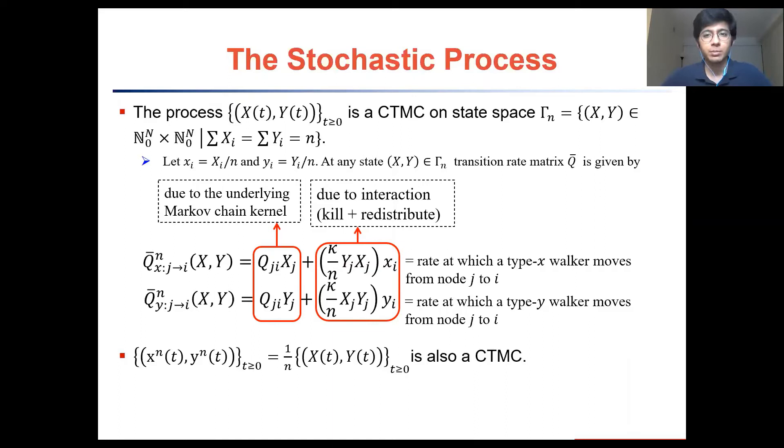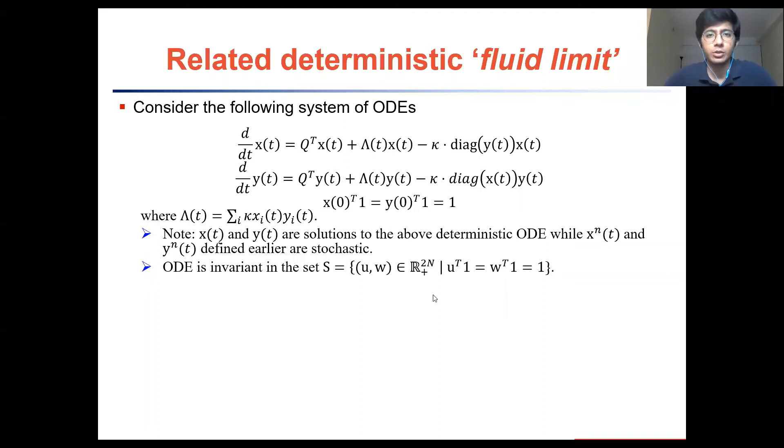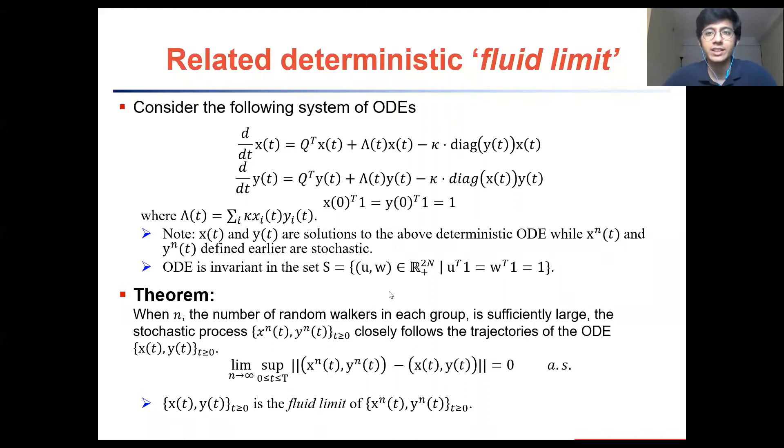We wish to analyze the convergence properties of this continuous time Markov chain given by little x raised to n and little y raised to n, which are the density distributions of the type x and type y walkers respectively at any given time t. In order to do that we consider the following system of ordinary differential equations. These equations were derived by examining the so-called mean field of a continuous time process. What this means is that we took summation over all possible jumps of a stochastic process multiplied by the rate at which each jump can occur. Here by jump we mean type x walkers moving from node j to i or type y walkers moving from node j to i. We proved that for sufficiently large number of walkers, trajectories of this stochastic process actually closely follows the solutions of this particular deterministic system over a finite time horizon.